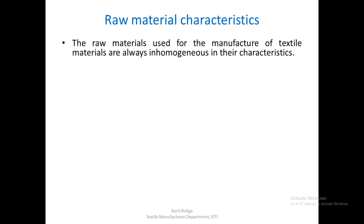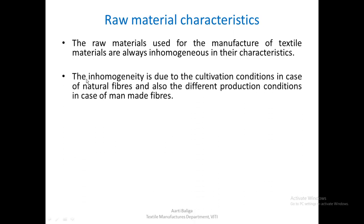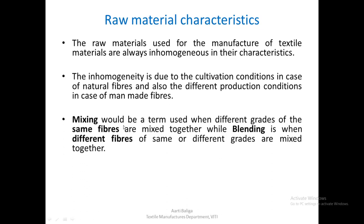Raw material characteristics. Before we see blending, we should know what kind of raw material we have. The raw materials used for the manufacture of textile materials are always inhomogeneous in their characteristics. The inhomogeneity is due to cultivation conditions in case of natural fibers and also because of different production conditions in case of manmade fibers. Mixing is a term normally used when different grades of the same fiber are mixed together, whereas blending is used when different fibers of the same or different grades are mixed together.